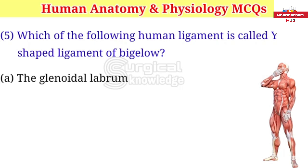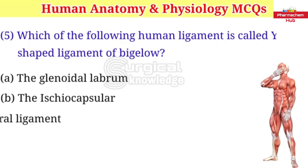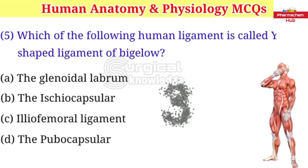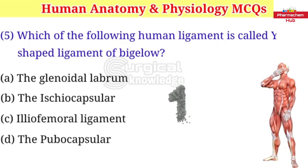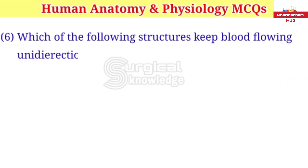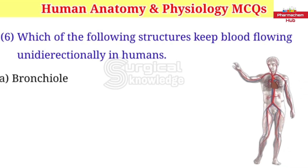Which of the following human ligament is called the Y-shaped ligament of Bigelow? A. The glenoidal labrum B. The ischiocapsular C. Iliofemoral ligament D. The pubocapsular. Right answer is iliofemoral ligament.